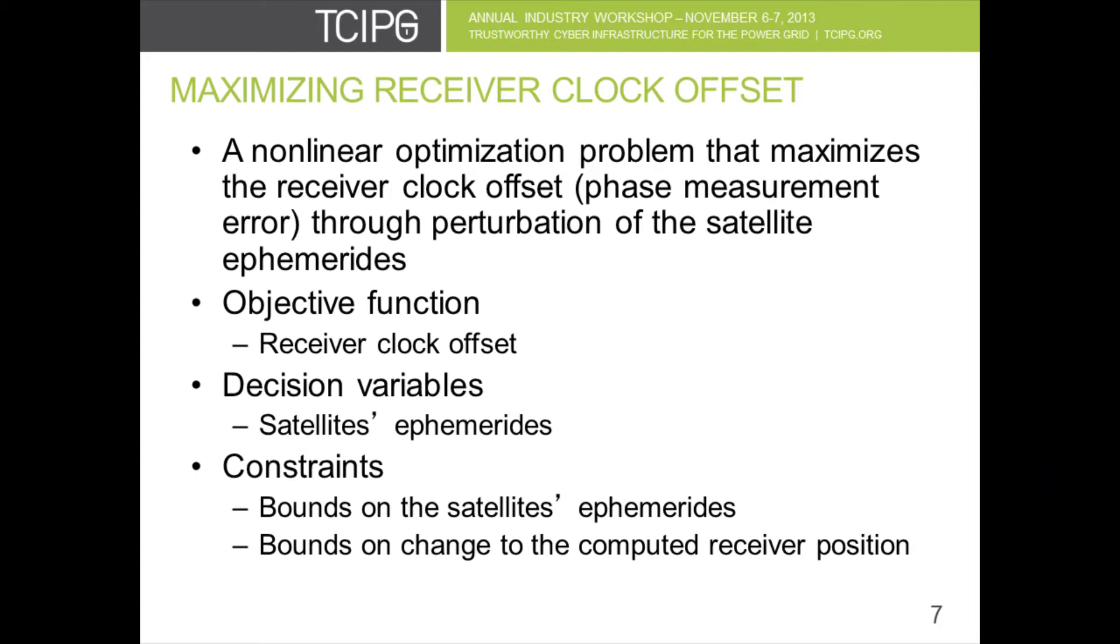The decision variables are the satellite's ephemerides. These ephemerides basically are parameters that allow you to compute the satellite's position, which in turn affects the computed receiver position as well as the clock offset. We place some constraints on the optimization program, and those include the bounds on the satellite's ephemerides. We allow them to not change significantly from their nominal value, and also the computed receiver position. That way, the post-spoofing computed receiver position does not change significantly from the pre-spoofed receiver position, so that it does not raise any red flags in form of attack detection.